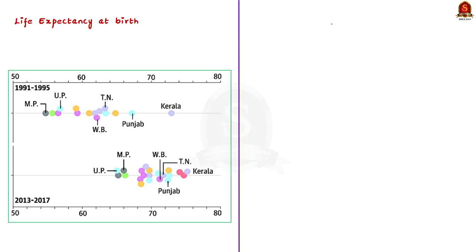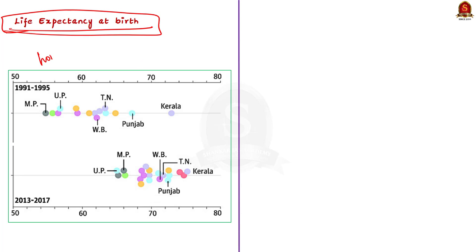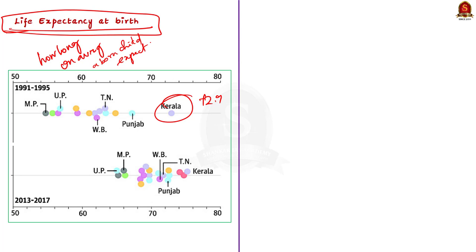Let us take this first graph. This graph talks about life expectancy at birth — it indicates how long on average a newborn can expect to live. The data shows that Kerala is the state with the highest life expectancy of 72.9 in the early 1990s and 75.2 in 2013 to 2017. Madhya Pradesh had the lowest life expectancy of 54.7 in the 1990s, and UP had the lowest of 65.9 in 2013 to 2017. There is clear inequality among states in terms of life expectancy.